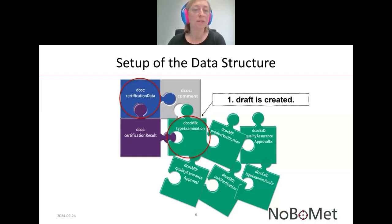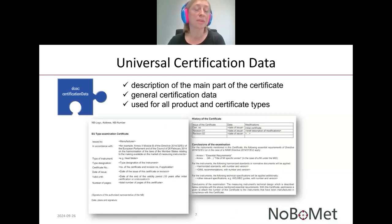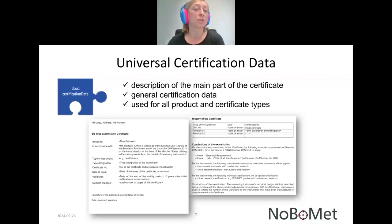Now let us look at the part data structure 'certification data.' This is a universal part data structure that can be applied for different certificates and product types. It describes the main part of the certificate, including general certification data such as details about the manufacturer, details about the certification body, designation of the product, certification number, date of certification, and so on.